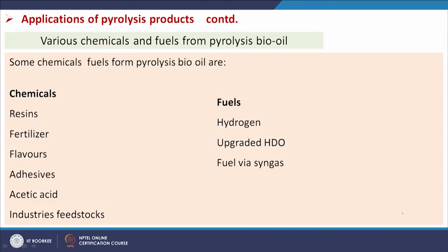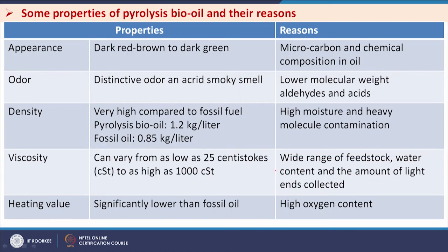Various chemicals and fuels can be produced from pyrolysis bio-oil. Chemicals include resins, fertilizers, flavors, adhesives, acetic acid, and industrial feedstocks. Fuels include hydrogen, upgraded hydro-deoxygenated oil, and fuel via syngas — where gasification produces syngas which can be converted to liquid fuel. These are the different applications of bio-oil.